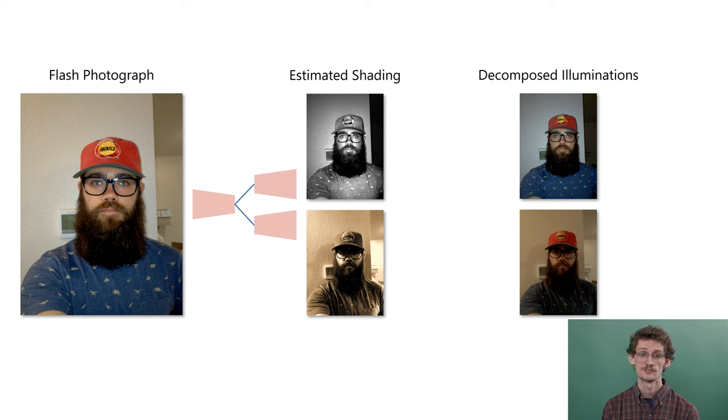More specifically, since flash photographs are white-balanced using the flashlight, we predict a single grayscale shading layer to represent the flash illumination. The ambient illumination is represented as the multiplication of a single grayscale shading layer and an RGB vector, in order to account for the color of the ambient light in the scene.